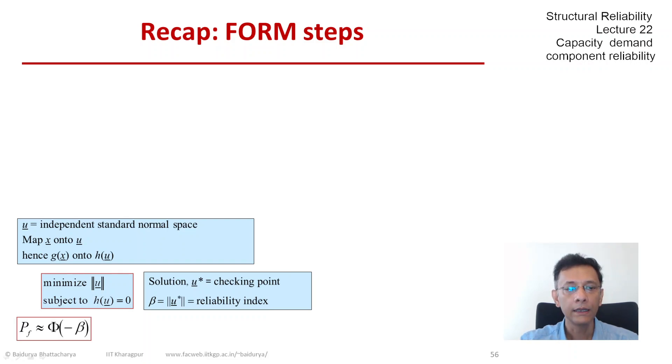These are the various names and that distance is the reliability index. So in an approximate sense, which we are going to probe in detail a little later in this lecture, the failure probability is phi of minus beta or the reliability is phi of beta.